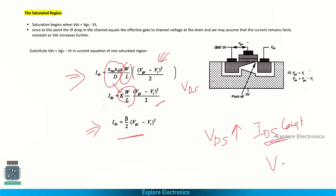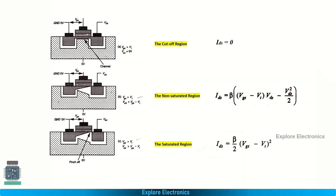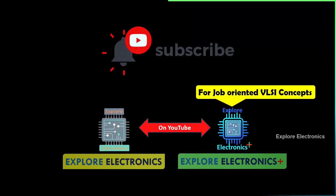Combining all three regions: IDS equals zero in the cutoff region; IDS = beta × [(VGS − VT) × VDS − VDS²/2] in the non-saturation region, where both VGS and VDS have influence; and IDS = (beta/2) × (VGS − VT)² in the saturation region, where only VGS controls the current. This covers the derivation and the current-voltage relationship between drain, source, and gate voltages in a MOSFET.